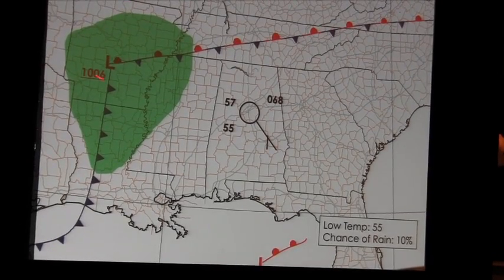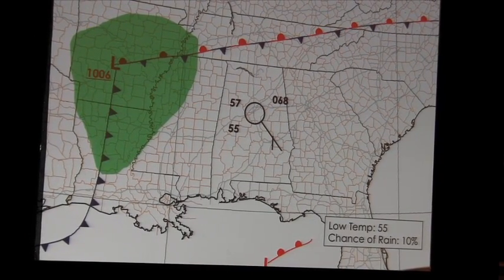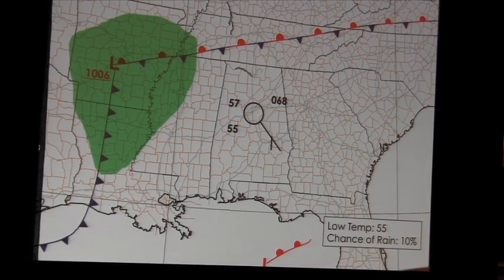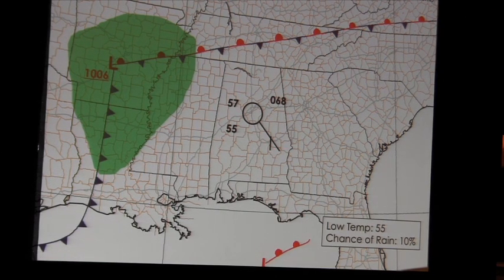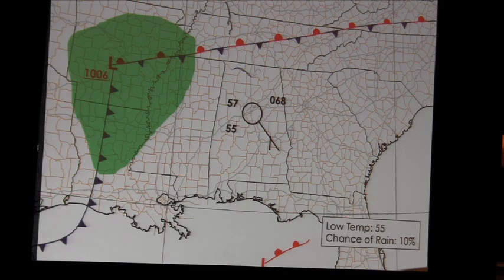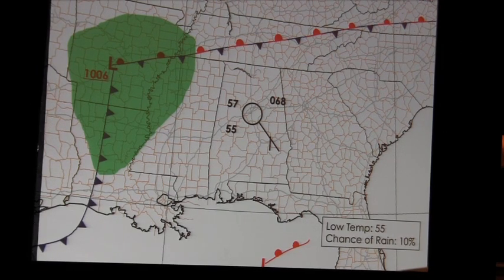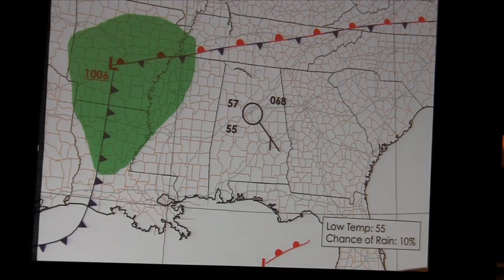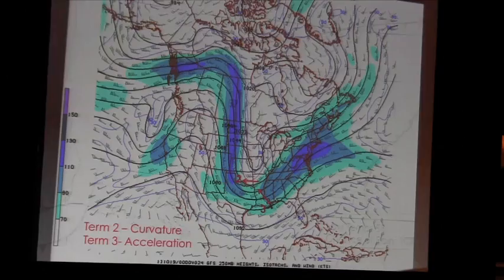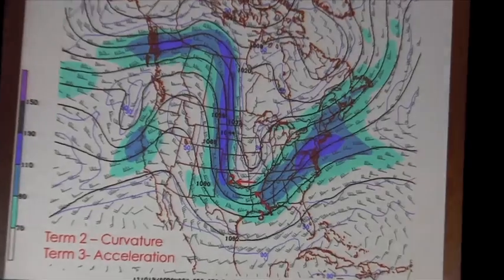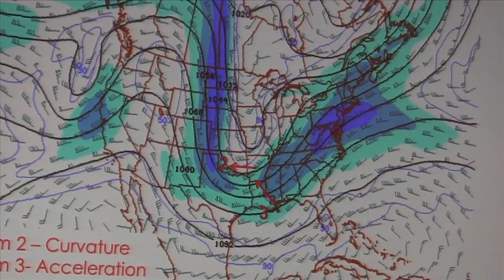For my 12-hour forecast, I think we will have a low off to the west around 1006 millibars with the cold front and a stationary boundary. For Birmingham, I think we'll have winds at about 3 knots, temperature about 57 degrees, dew point about 55, and pressure about 1006.8 millibars. I do believe we'll have clear skies, even though we had a little divergence due to term three at 250 mb, given the neutral advection and no moisture or lifting at the 700 mb level.